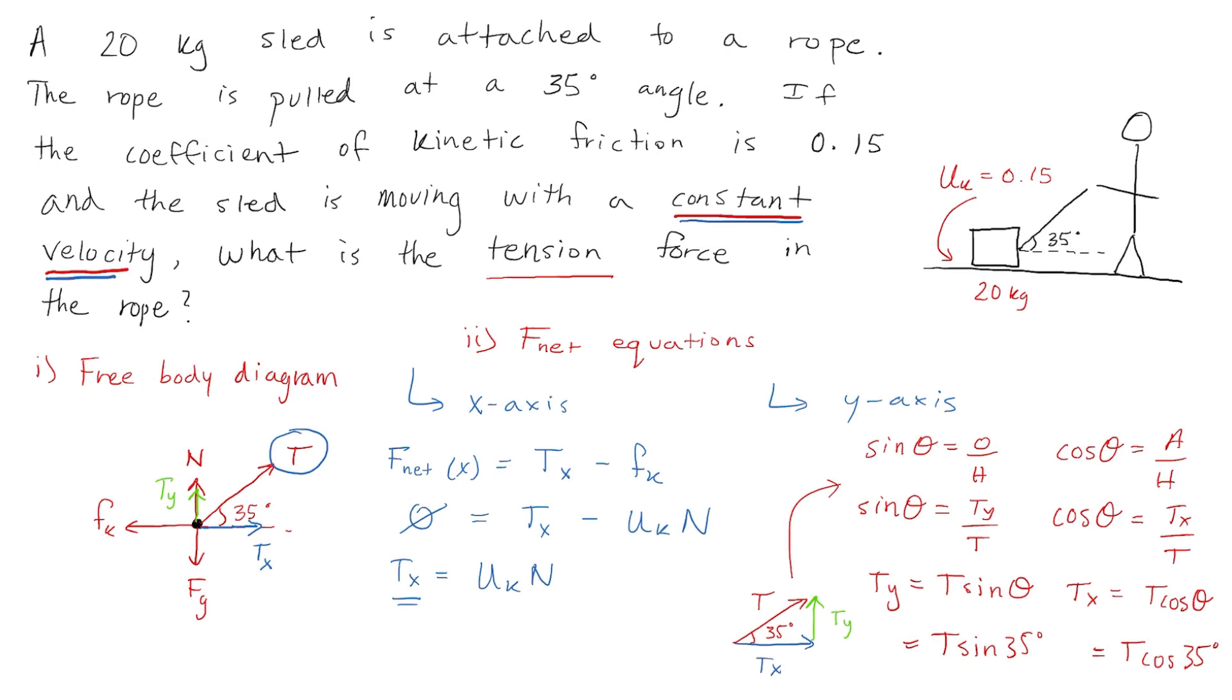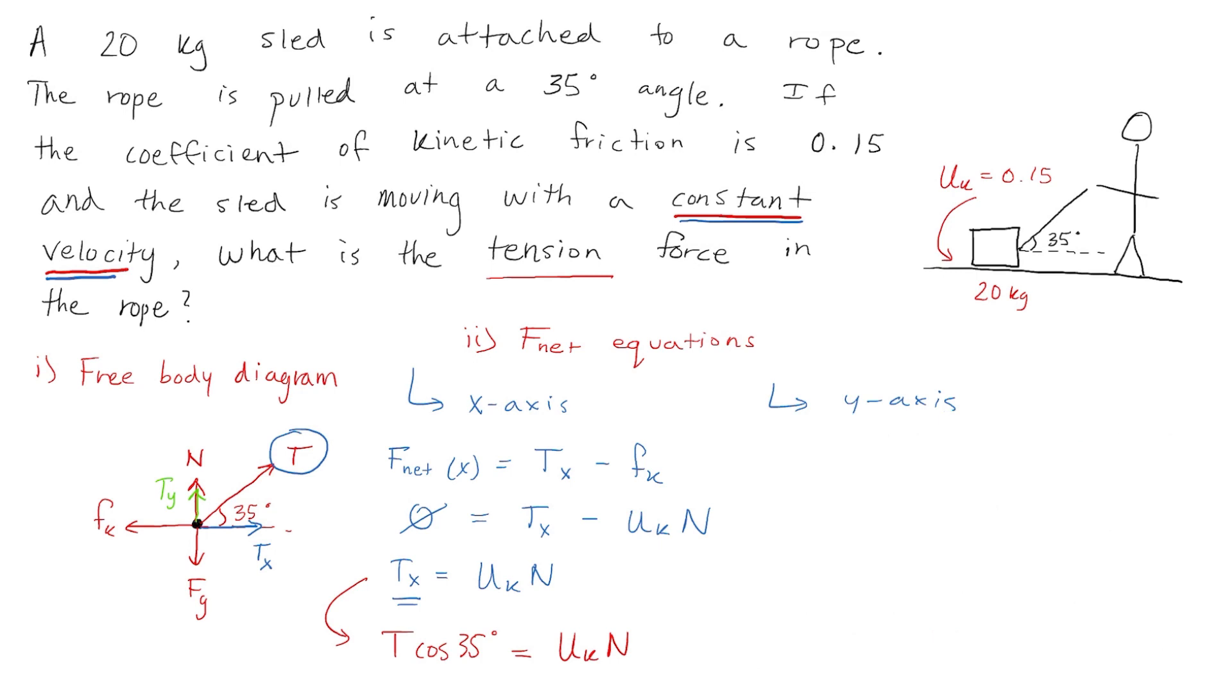And now we have Tx and Ty in terms of our tension force T. So looking back at our F net x equation, I will replace Tx with T cos 35. Now let's move on to our F net y equation, which would be the sum of all the forces acting along the y axis. So that would be the normal force plus Ty minus the force of gravity. F net y is equal to zero because the sled is not moving up or down. So there's no net force along the y axis. We can also replace Ty with T sine 35 degrees. And we can replace the force of gravity with mg.